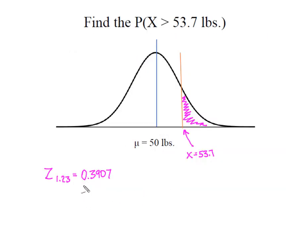We found the area associated with a z-score of 1.23, and based on the table that I'm using, I know that 0.3907 falls between the mean and my value of x on the curve. I also know that this area plus this area is going to equal 0.50.